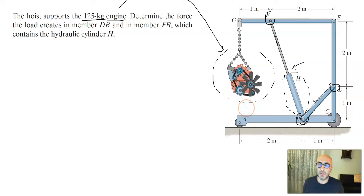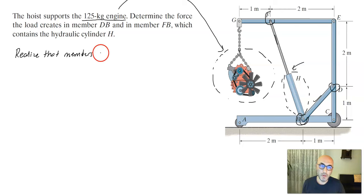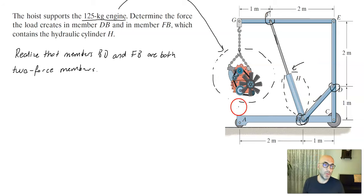To solve this problem, it is important to realize that both members BD and FB are two-force members. This makes the solution of such problems — which include members pin-connected to each other — simpler.